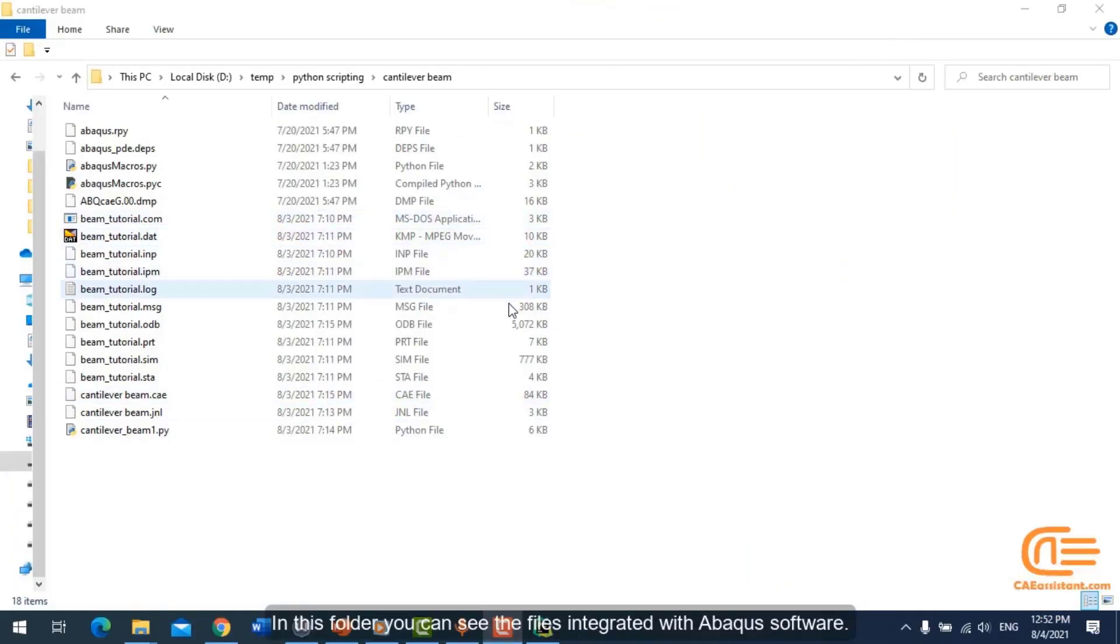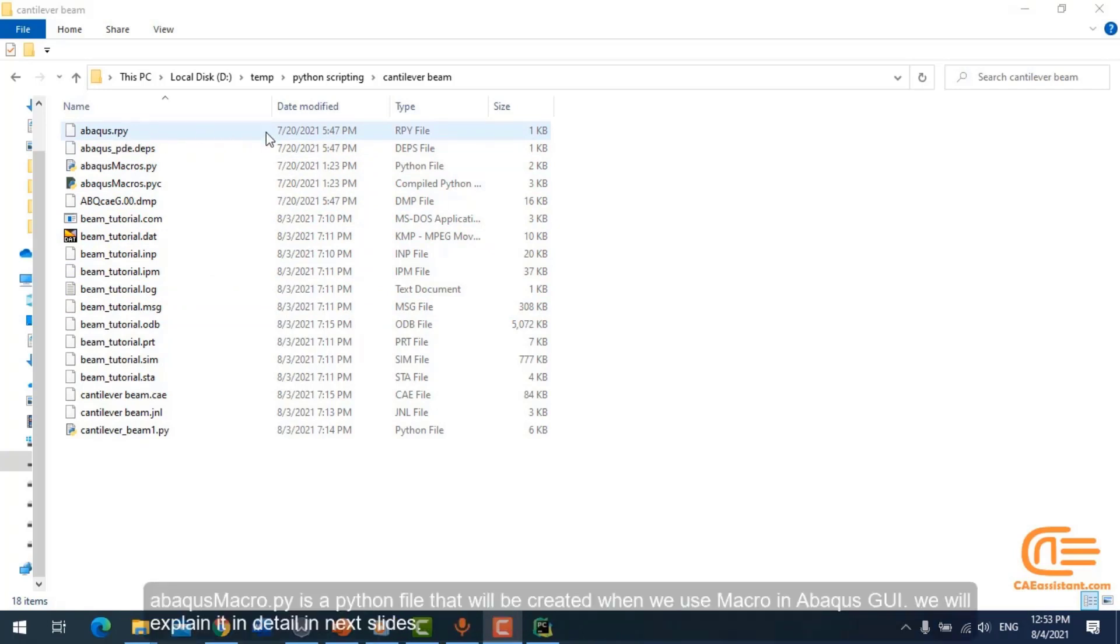In this folder, you can see the files integrated with Abacus software. The file with extension .rpy is a replay file. Abacus macro.py is a Python file that will be created when we use macro in Abacus GUI. We will explain it in details in the next slides.